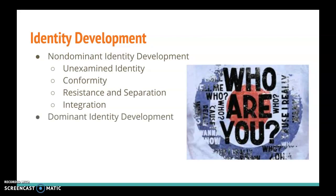Next, let's talk about dominant identity development. Dominant identity development happens in five stages. First, like with non-dominant identity development, we have the unexamined identity. This happens when an individual doesn't think about their own identity or the identity of others. In most cases, they might not even realize that there is a hierarchy that treats some people differently than others, and they might not think that any hierarchy that does exist applies to them. Some people might stay in this phase of unexamined identity for a long time — in some cases, for their entire lives.